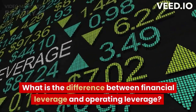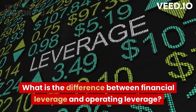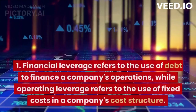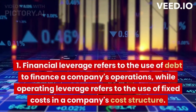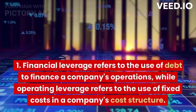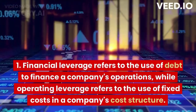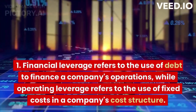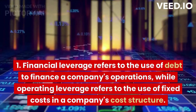What is the difference between financial leverage and operating leverage? Financial leverage refers to the use of debt to finance a company's operations, while operating leverage refers to the use of fixed costs in a company's cost structure.